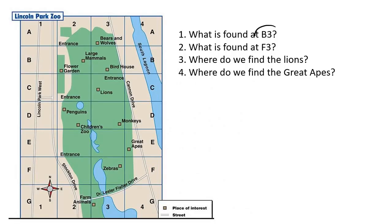So the first question says, what is found at B3? So we go across the B and we go down at 3. And what we can see is that this is over here. You might say it's large mammals, but large mammals, the block is over there. But look at this. We've got birdhouse. So we can say birdhouse.